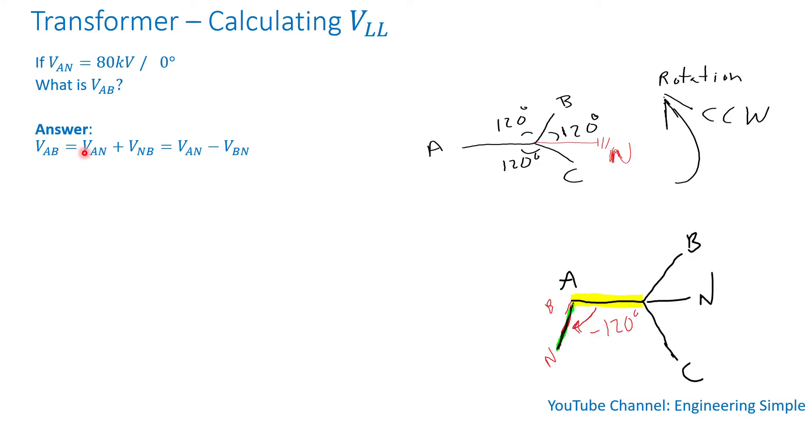So VAB is equal to VAN plus VNB from vector operations, which is equal to VAN minus VBN if I write VNB as negative VBN.